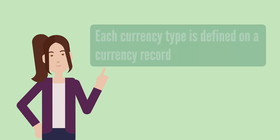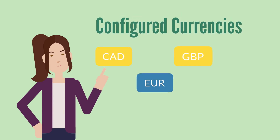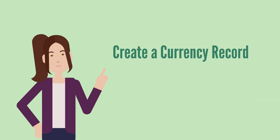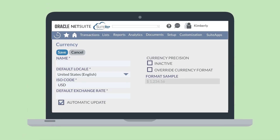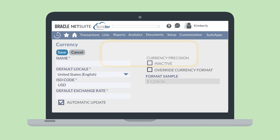NetSuite automatically provides CAD, EUR, GBP, and USD when you initially enable multiple currencies. But to add any additional currencies, you would need to create a currency record. To create a new currency record, navigate to Lists, Accounting, Currencies, New.